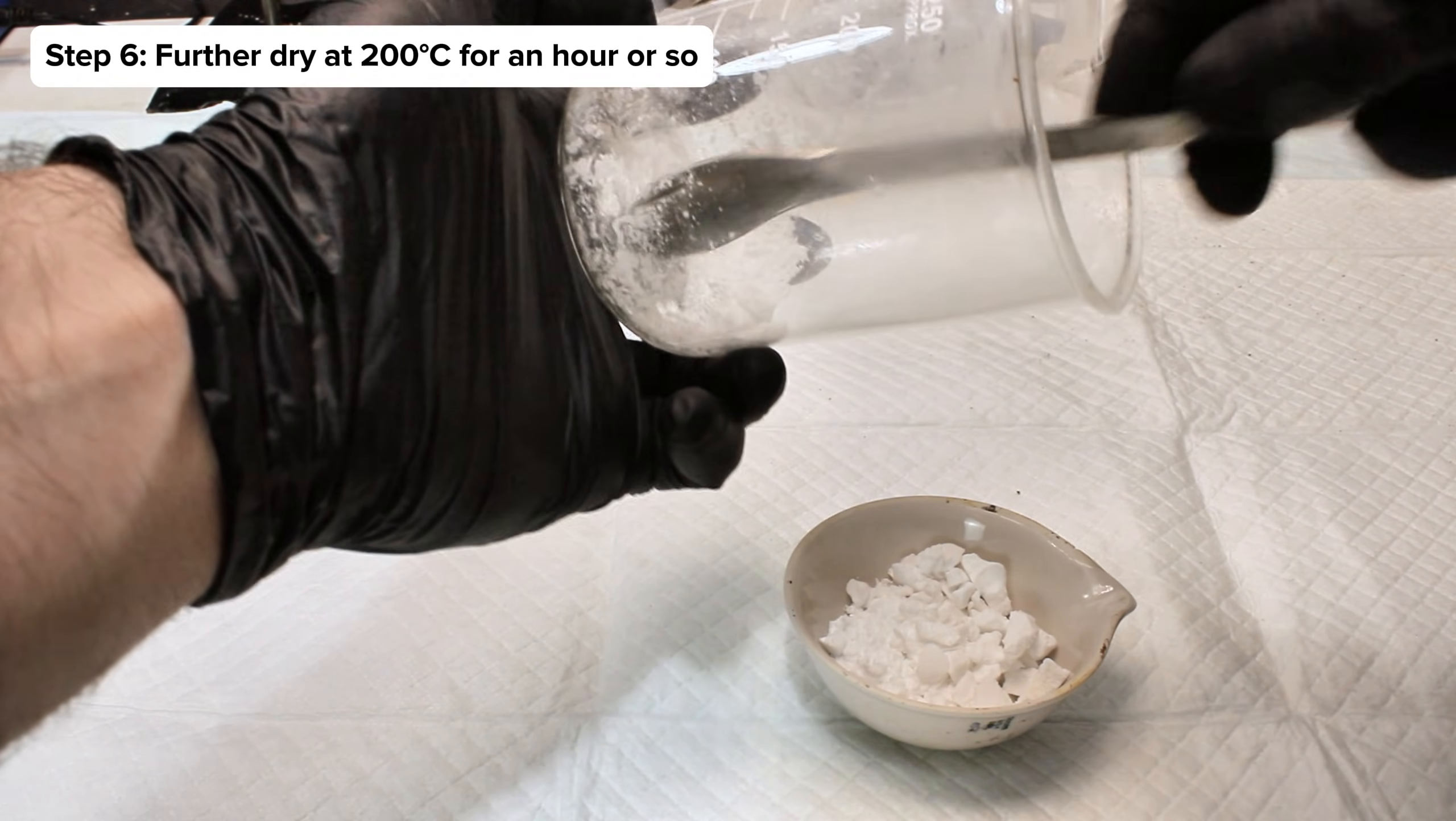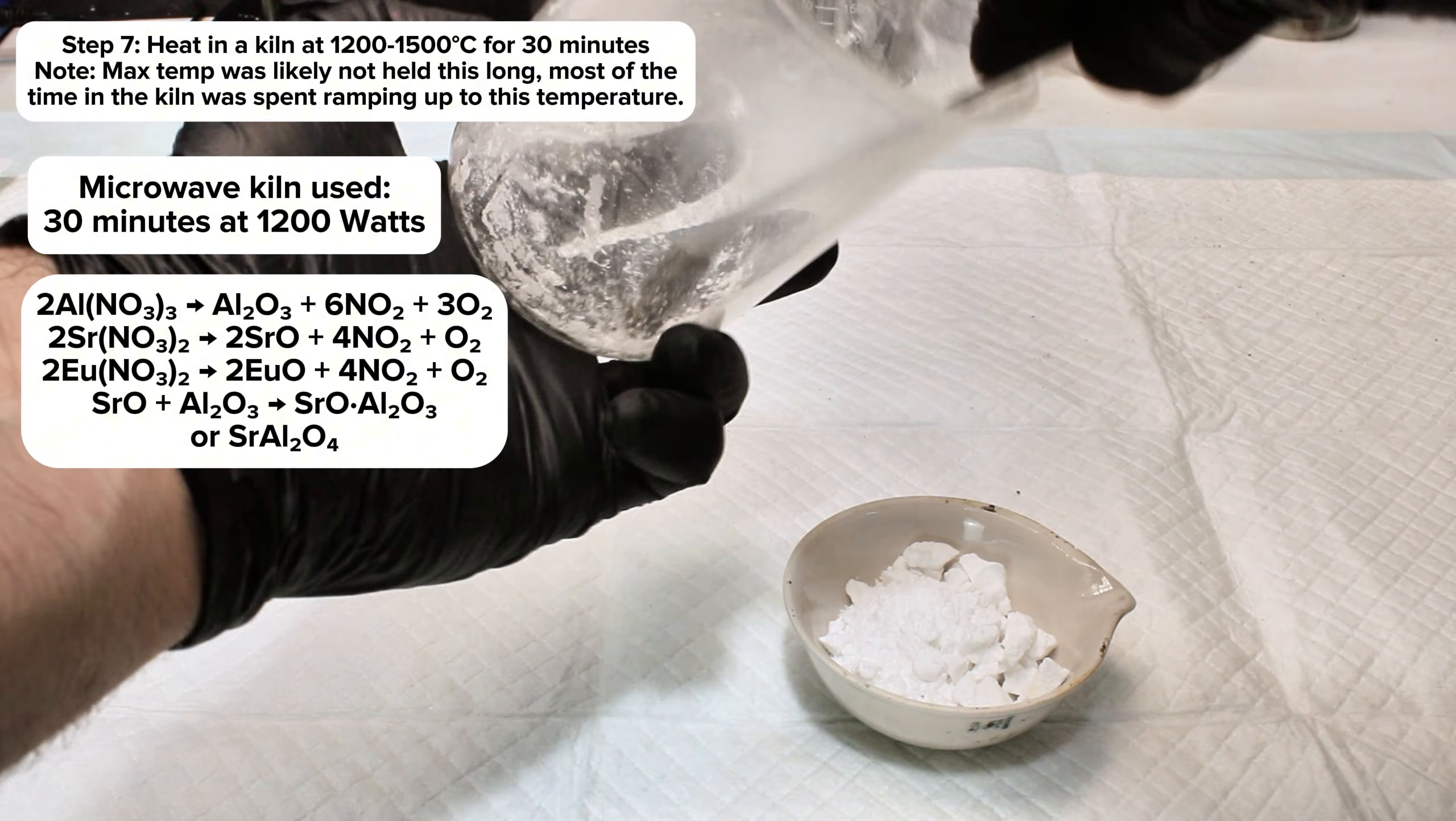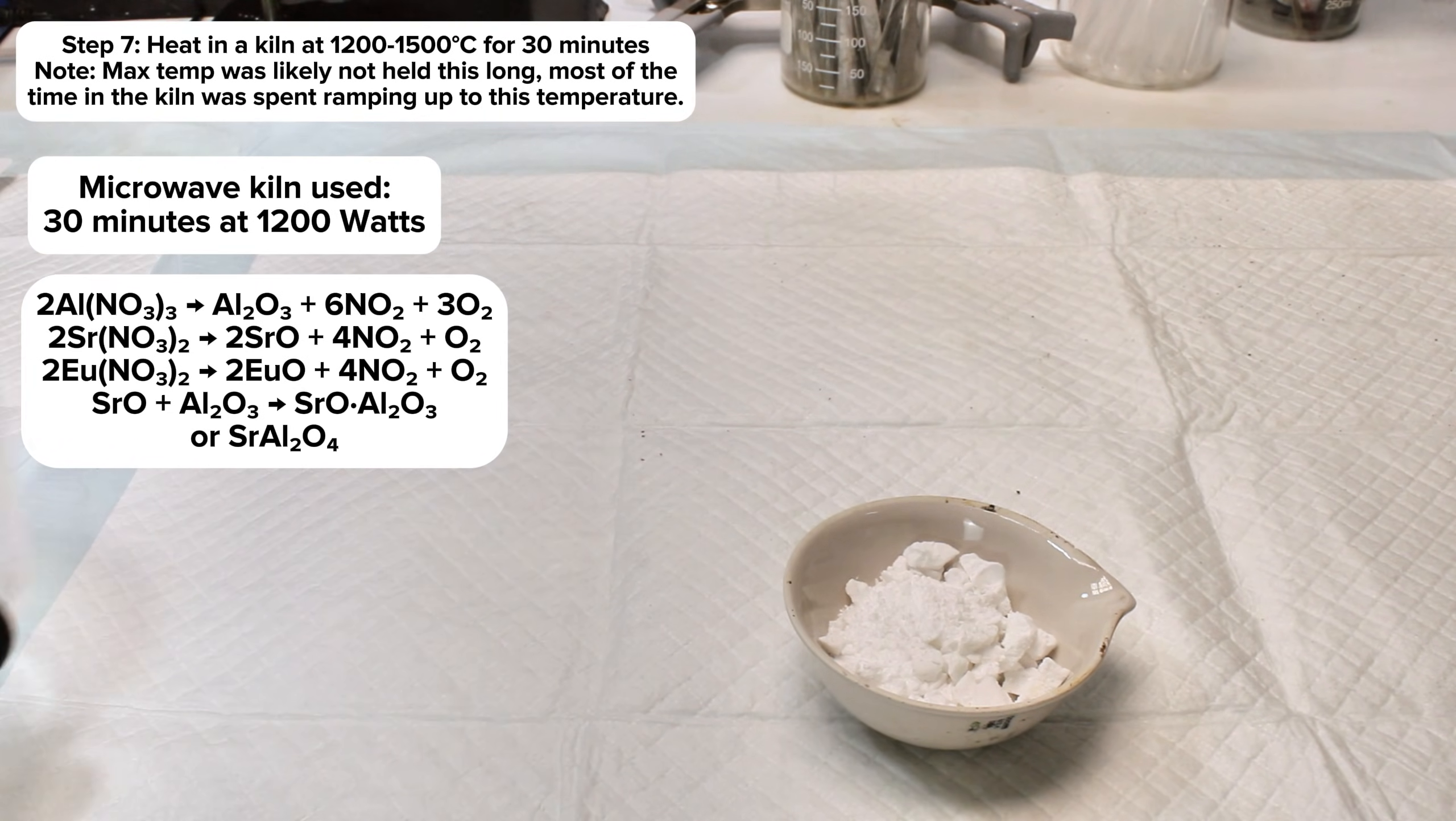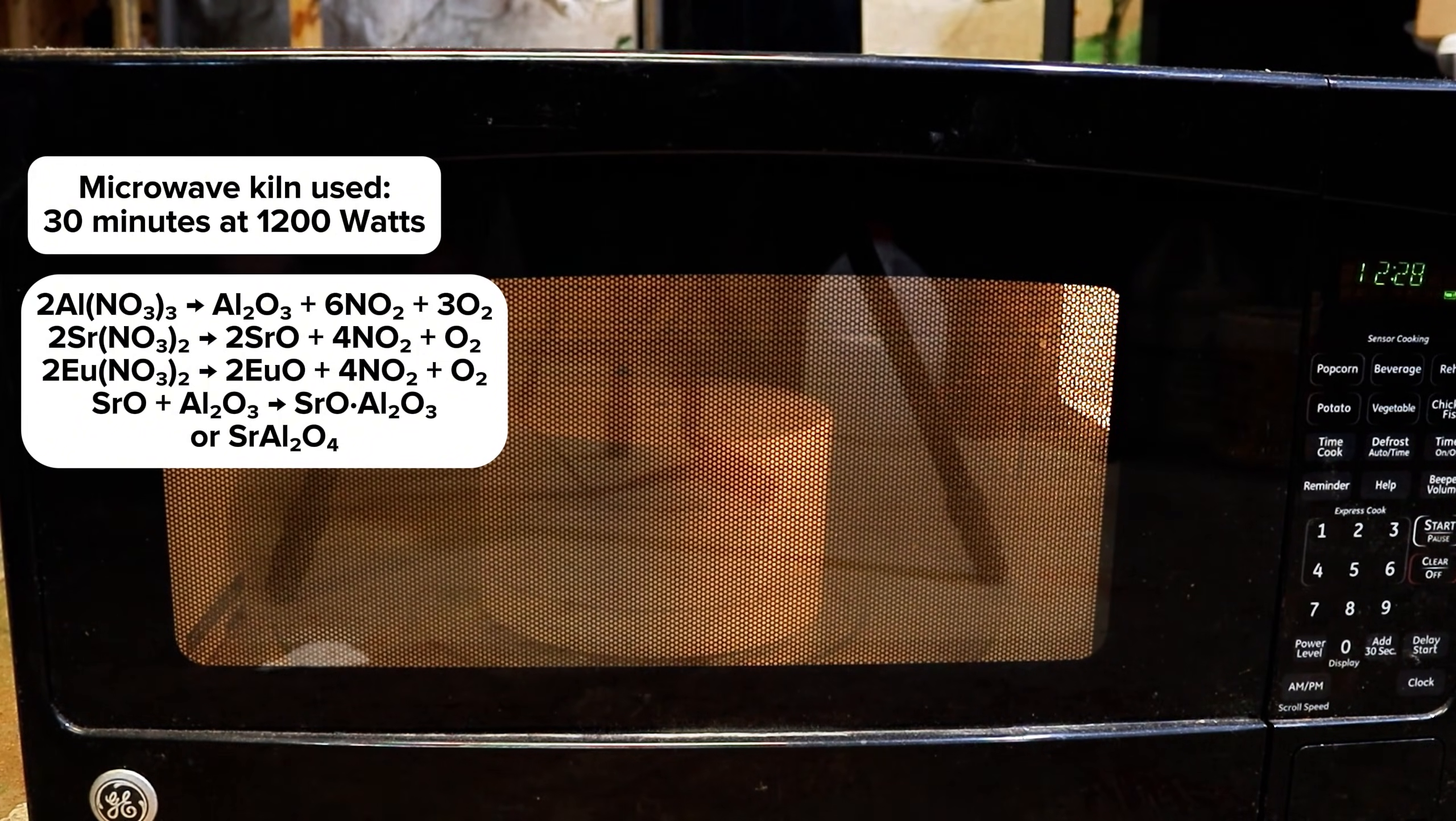This was then transferred directly into my microwave kiln and fired for exactly 30 minutes at 1200 watts. The idea here is that the extreme heat produced by the microwave kiln should decompose each of these metal nitrates to their respective oxides, which will then fuse together to form the target product.